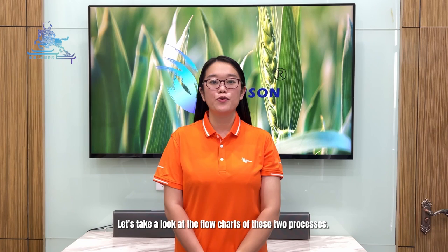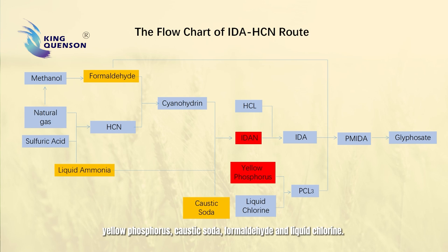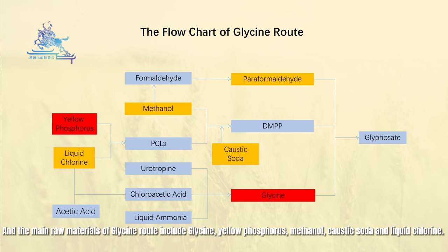Let's take a look at the flowcharts of these two processes. For the IBA route, the main raw materials include IBA, yellow phosphorus, caustic soda, formaldehyde, and liquid chlorine. For the glycine route, the main raw materials include glycine, yellow phosphorus, mycinole, caustic soda, and liquid chlorine.